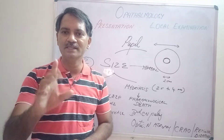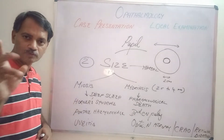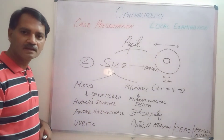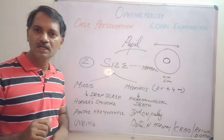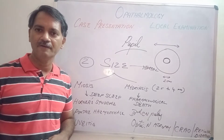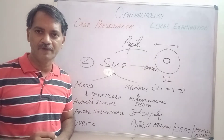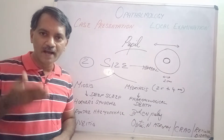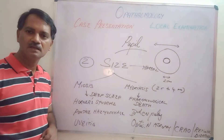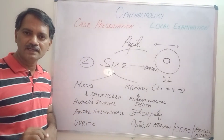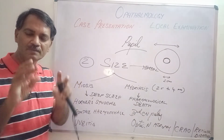Let us see the common causes for miosis and mydriasis. As far as miosis is concerned, both pupils will be very small when the person is in deep sleep. The patient's pupil will be in miosis in Horner's syndrome, an autonomic dysfunction where the patient has ptosis (drooping of eyelids), miosis (constricted pupil), anhidrosis (loss of sweating on the side of the face), and enophthalmos (the eye shifted backwards into the socket). Another common cause for miosis is pontine hemorrhage — a cerebrovascular accident in the brainstem where hemorrhage into the pons renders the patient unconscious and the pupil very small and constricted.